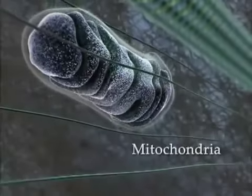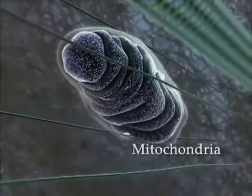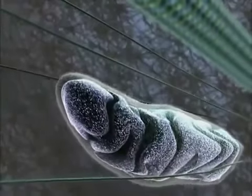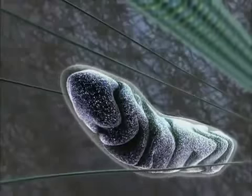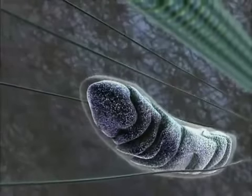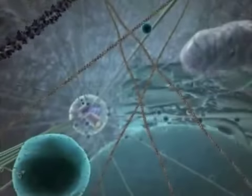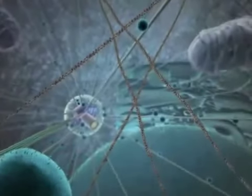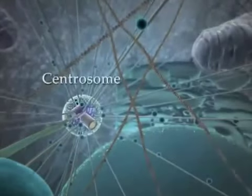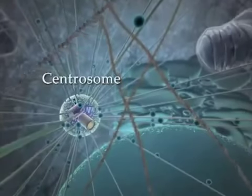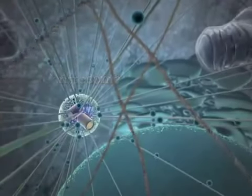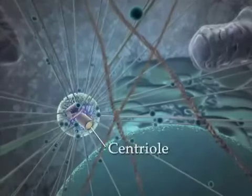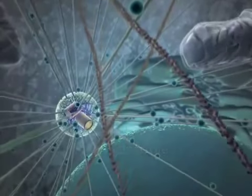Mitochondria change shape continuously, and their orientation is partly dictated by their interaction with microtubules. All the microtubules originate from the centrosome, a discrete fiber structure containing two orthogonal centrioles and located near the cell nucleus.